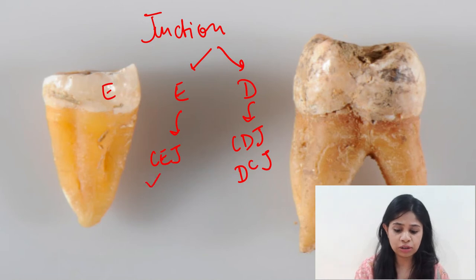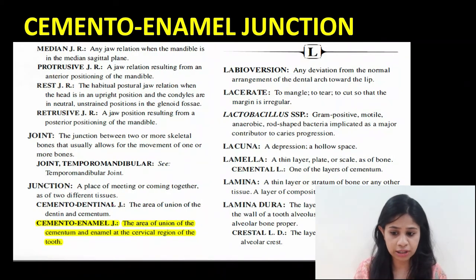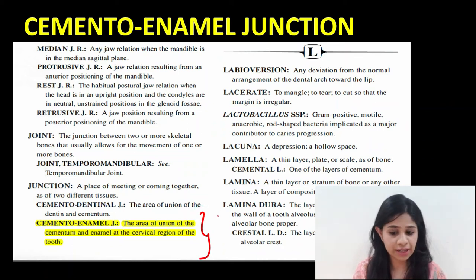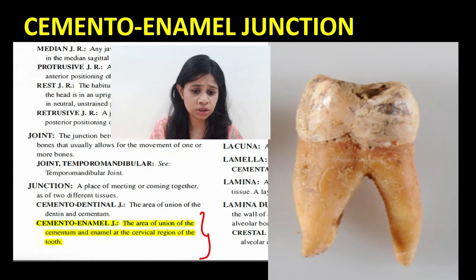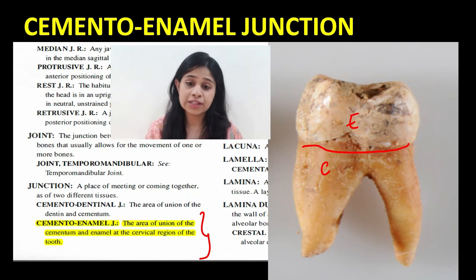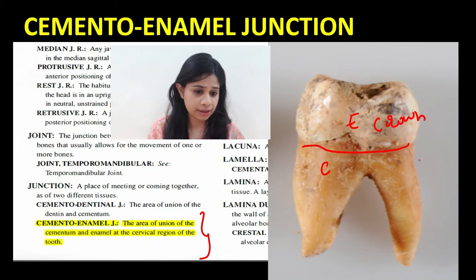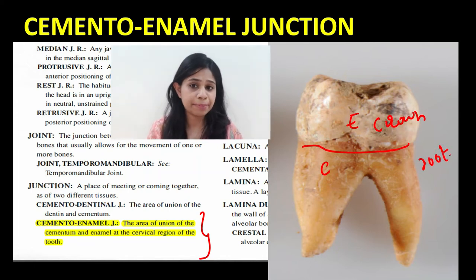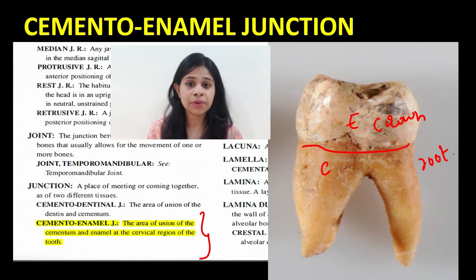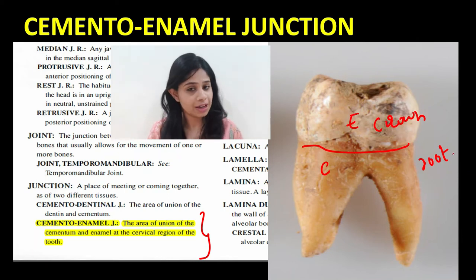The cemento-enamel junction (CEJ), as defined by the Glossary of Periodontal Terms, is the area of union of cementum and enamel at the cervical region of the tooth. The cervical region is where the enamel and cementum meet. The CEJ is a very important reference point in clinical dentistry as it marks the finishing of the crown area and the beginning of the root area, and must be kept in mind while planning aesthetic procedures and preparing crowns.